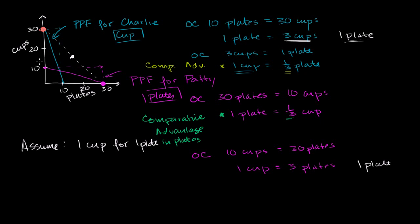But if we assume that in all these scenarios they have the same number of inputs — say they each have one employee — and given that same number of inputs Patty is able to produce more plates than Charlie, then Patty would have an absolute advantage in plates. And if given the same number of inputs Charlie is able to produce more cups than Patty, then he would have an absolute advantage in cups. But it is not because of that absolute advantage that he is specializing.